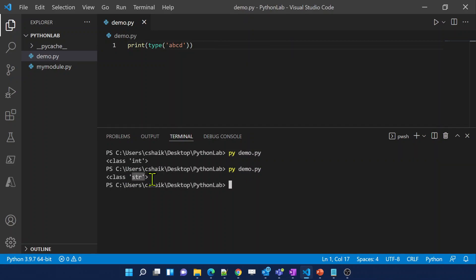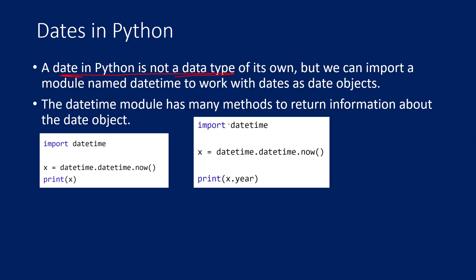We have other data types — in our past videos we have discussed list, tuple, and so many things. But there is no data type called date in Python. So what you need to do is use a module called the datetime module. You need to import that module and then try to create date objects or work with dates in Python.